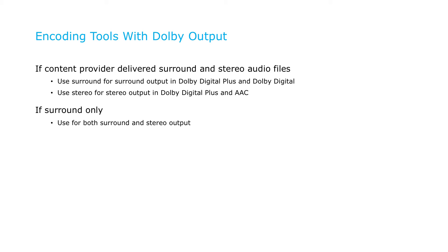In this case, we're starting with 5.1 surround only, which we'll use to produce the surround and stereo outputs. If you're starting with stereo, you should produce only Dolby Digital Plus and AAC stereo output.